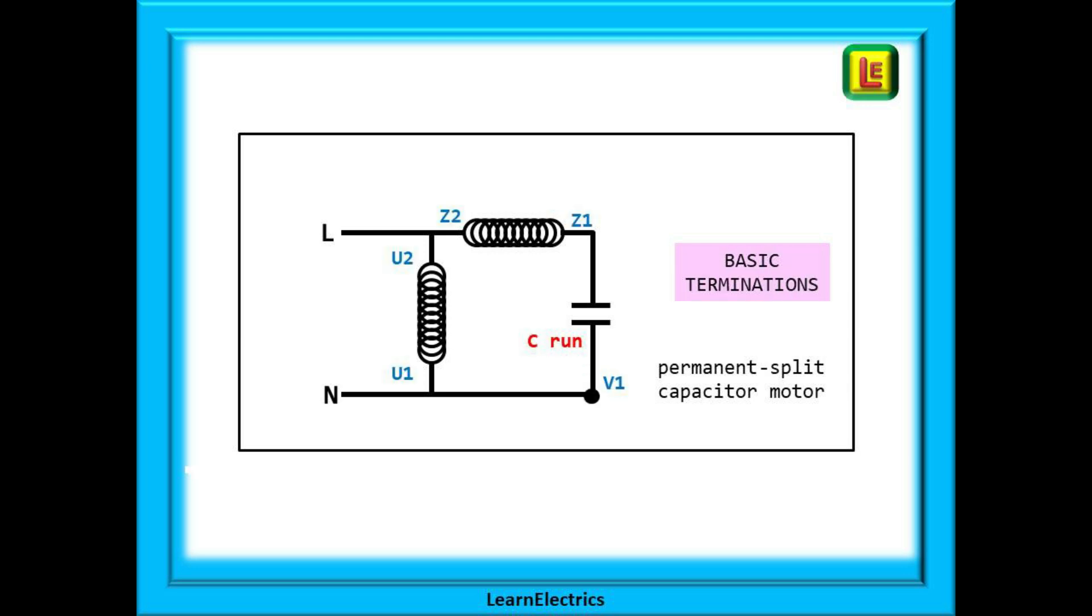Each winding has two ends so we have U1 and U2 and we have Z1 and Z2. How we connect the U's and Z's together determines the rotation direction. You will notice that we've also included terminal V1 on this drawing and others. We need somewhere to connect the capacitor and V1 is convenient for us.